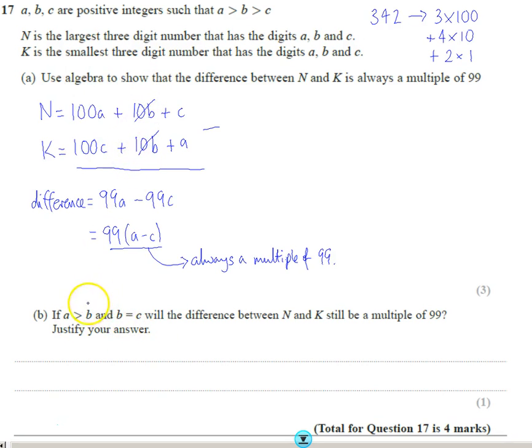This follow-up question says, if A is bigger than B and B is the same size as C, will the difference between N and K still be a multiple of 99? Justify your answer. Well, there's two ways to go about it. There's one way to kind of think logically. Like, B has no impact on this. Okay? So B has got no impact. Therefore, the difference between them, B is never going to have a difference. So even if B is the same as something, then when you take it away, you're still going to get this multiple of 99, so even if they're the same.